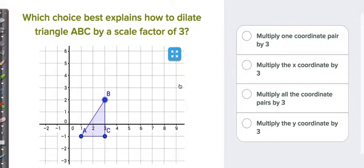So this is slide 1. It says: which choice best explains how to dilate triangle ABC by a scale factor of 3? Select the best answer.